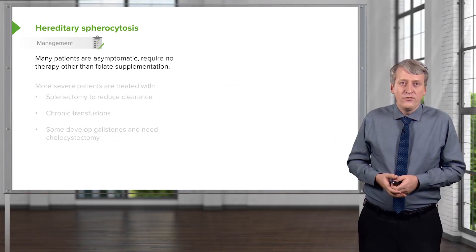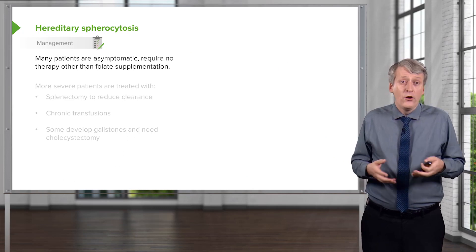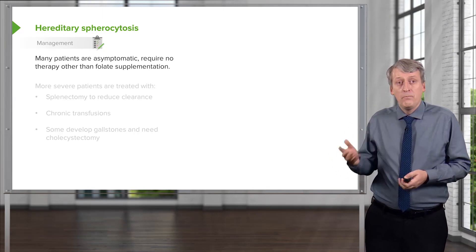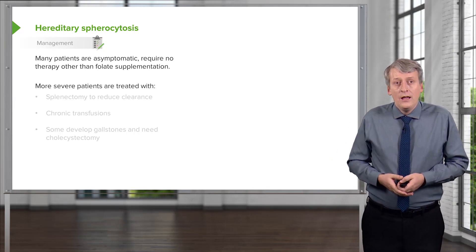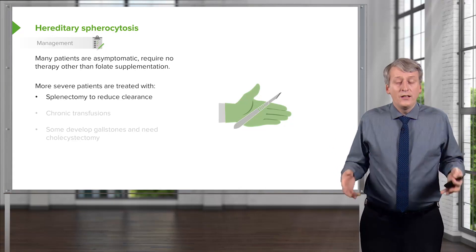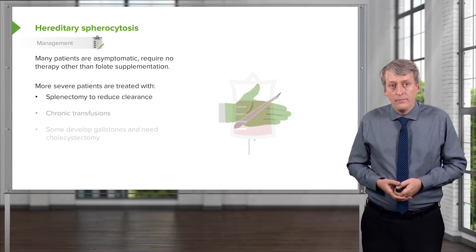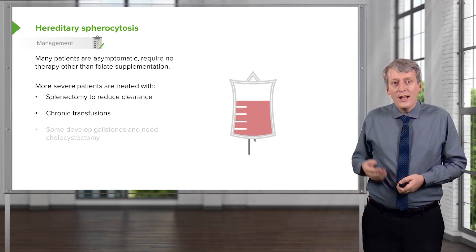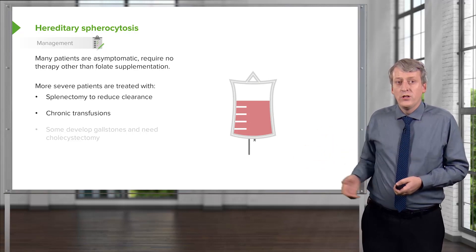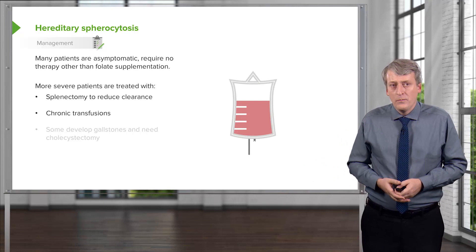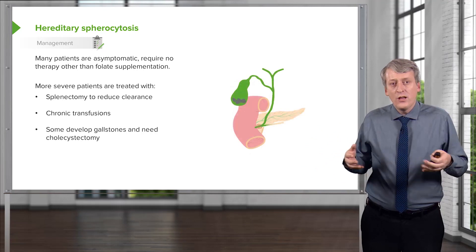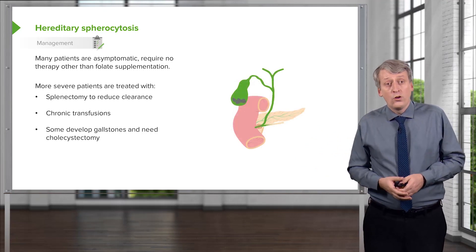Many patients with hereditary spherocytosis are asymptomatic and require no therapy other than perhaps folate supplementation, because since they're making so many cells, they're burning through it. More severe patients are treated with splenectomy, which reduces that clearance so they're less likely to have severe anemia. They may get chronic transfusions — and that's actually why we're not necessarily supplementing with iron, because they may end up iron overloaded from those transfusions. Another issue is that because there's so much hemoglobin turnover, some may develop gallstones and eventually need cholecystectomy.